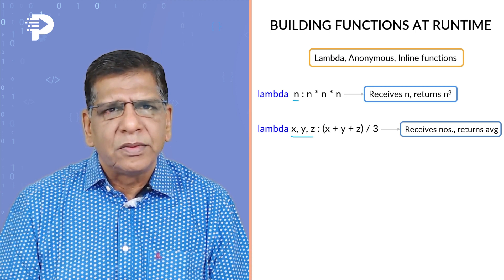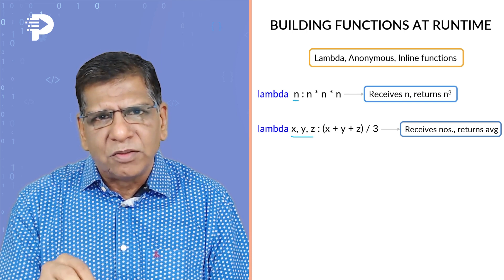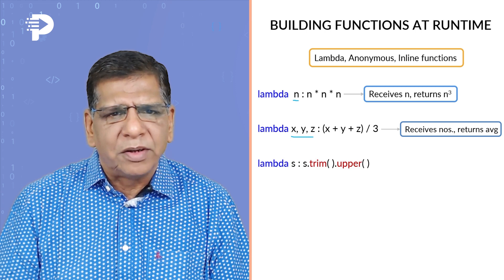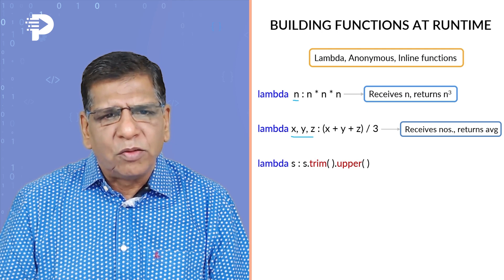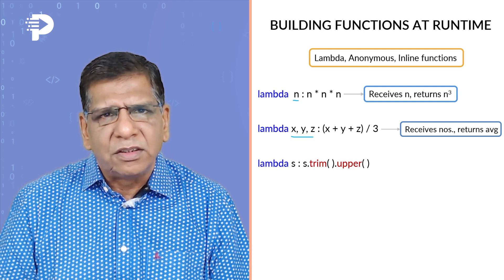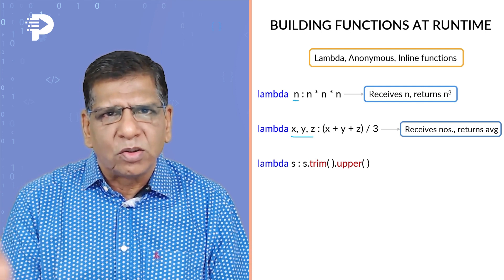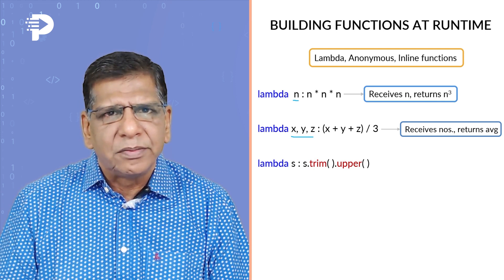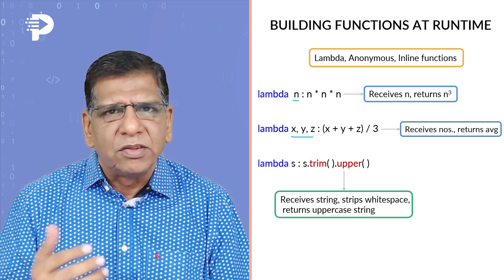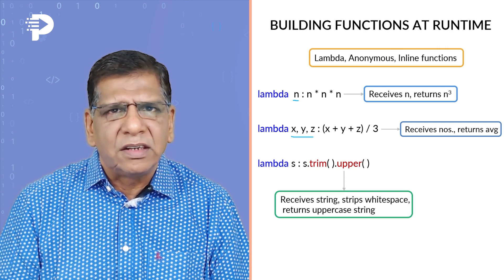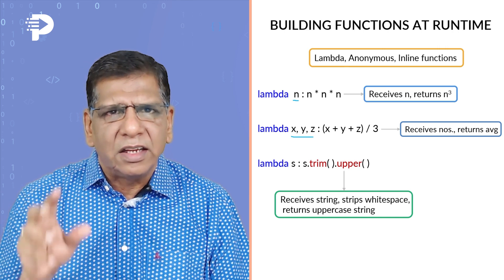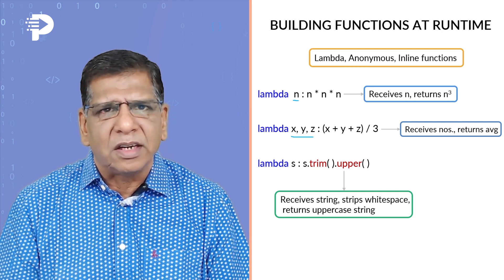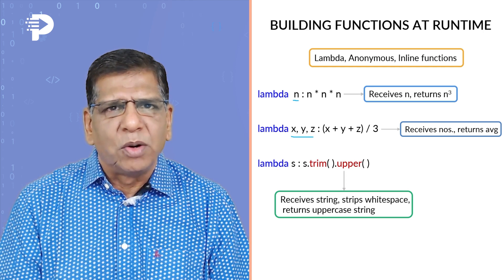Don't think that lambda functions can only be used with numeric variables. You can also create a lambda function for strings. For example, a lambda function which receives a string, strips white space from the left and right using lstrip and rstrip, converts the balance string to uppercase, and returns it. This tells us that a lambda function can receive one argument or more than one argument, and that argument can be a number or a string.